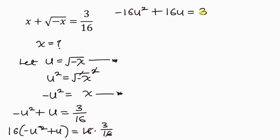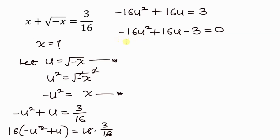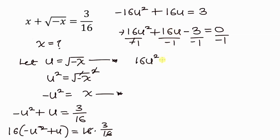Let's move the 3 to the left-hand side, giving us negative 16u squared plus 16u minus 3 equal to 0. I don't like this leading negative, so I'll divide through by negative 1. That gives us 16u squared minus 16u plus 3 equal to 0 — a nice quadratic equation.